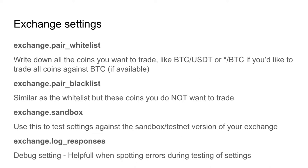These CCXT-specific config parameters are directed to certain specific CCXT exchange settings. I admit I'm not an expert in these settings as I mainly use the default configuration from FreqTrade. Reading through the FreqTrade pages tells me that one of the main concerns for connecting to exchanges is the possibility of getting blacklisted due to too many requests, causing the exchange to think you are DDoSing it. For more specific information I recommend reading the exchange pages on the FreqTrade site. If you can give a better explanation on how to use these CCXT configuration parameters, please do so in the comments section.